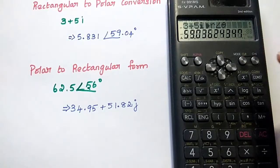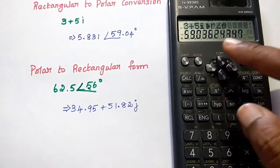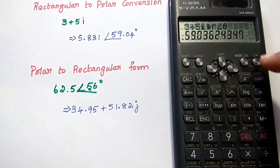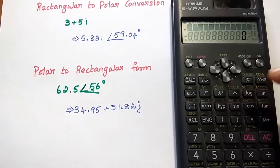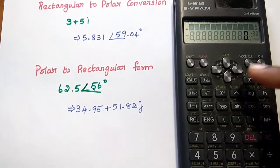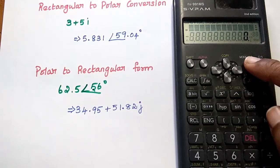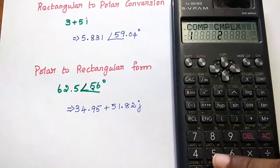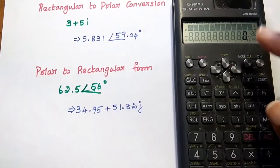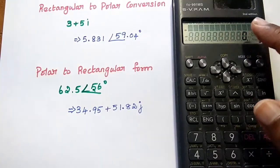You will understand this one. It is very simple to convert rectangular to polar form. The same way, we can convert the polar to rectangular form. Again, the first step is to select the mode as complex. Press mode and select number 2. Then the mode is complex mode.